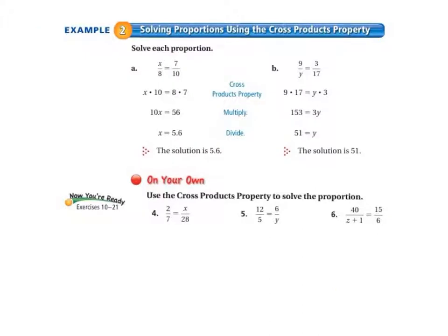Now we're going to look at our next method of solving proportions, which is solving proportions using the cross products property. Let's look at example a, x/8 equals 7/10. What we do is we cross multiply. 10 times x and 8 times 7. x times 10 equals 10x and 8 times 7 equals 56. Then when we solve for x, we get x equals 5.6. So the solution is 5.6.